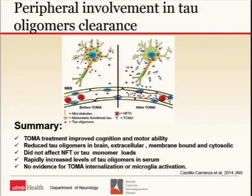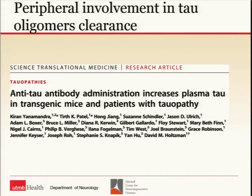This mechanism was published, and five years later David Holzman's group confirmed it. They injected their antibody in P301S mice and saw a spike of tau in serum. They then humanized the antibody and administered it to progressive supranuclear palsy patients — and saw the same phenomenon. Even in humans, giving small intravenous amounts causes a measurable spike of tau, which you can quantify.